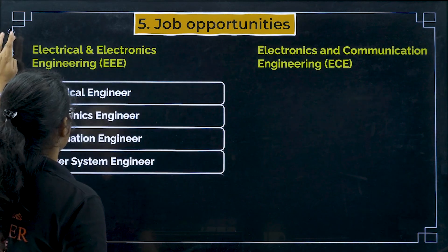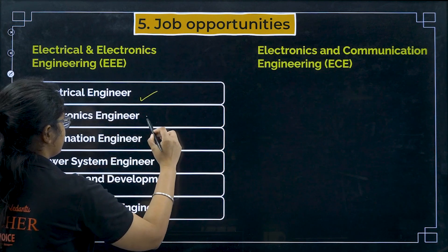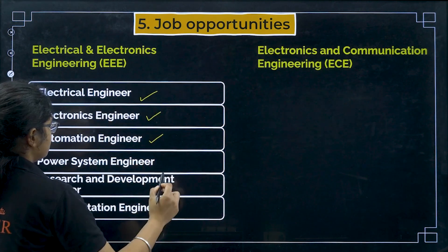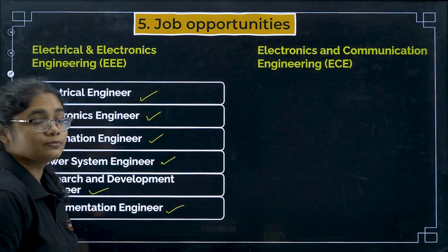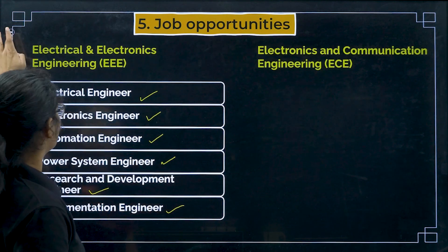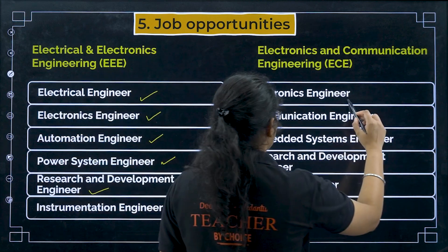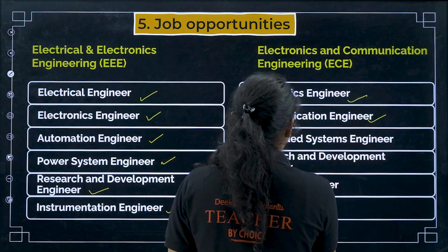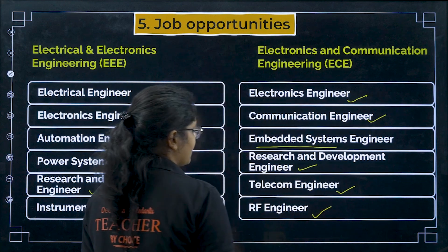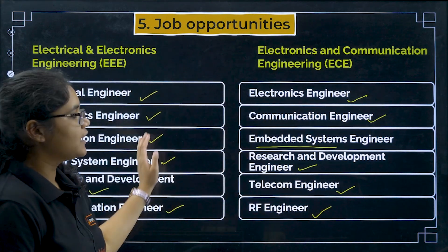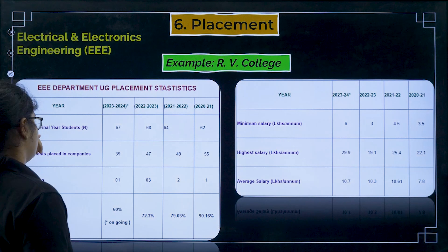Now for job roles: in EEE, you can become an electrical engineer, electronic engineer, automation engineer, power system engineer, research and development engineer, or instrumentation engineer. In ECE, the available roles include electronics engineer, communication engineer, embedded system engineer, R&D engineer, telecom engineer, and RF engineer. These are the different job roles available for both branches.